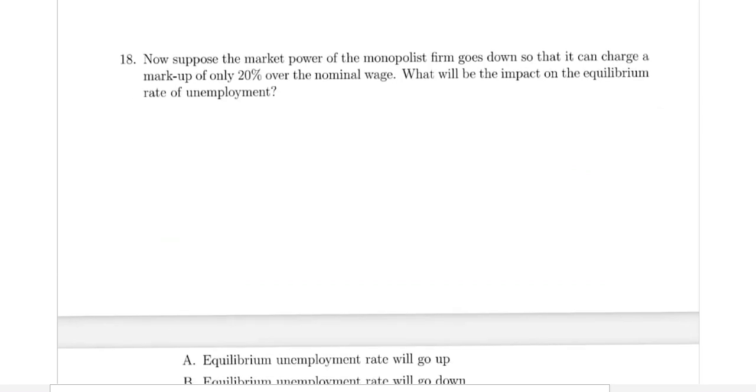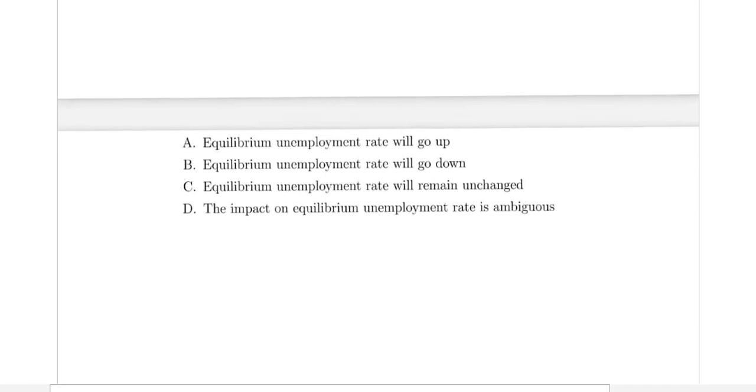Now suppose that the market power of the monopolist goes down so that he can charge a markup of 20% of the nominal wage. What will be the impact on the equilibrium rate of unemployment? Will it go up, go down, remain unchanged, or be ambiguous?